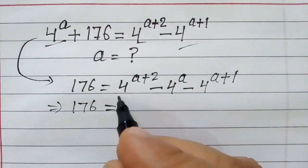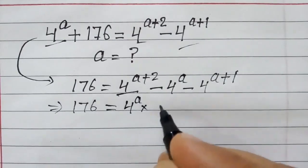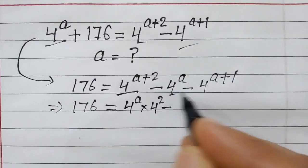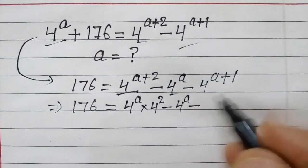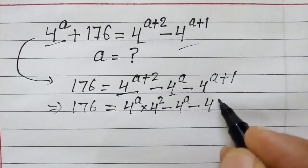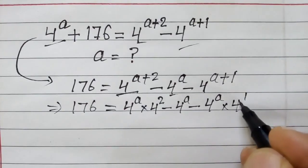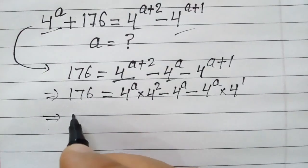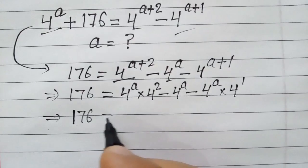Now we will break this: 4 to the power a plus 2 into 4 to the power a into 4 to the power 2, minus 4 to the power a, minus — we will again break this as 4 to the power a into 4 to the power 1. So 176 is equal to...